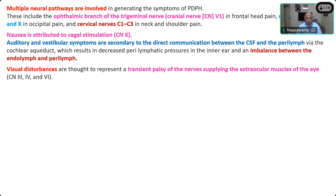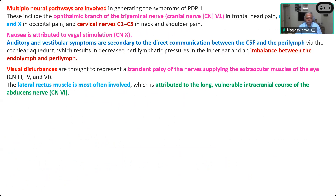Visual disturbances are caused by transient palsy of the nerves supplying the extraocular muscles — cranial nerves 3, 4, and especially cranial nerve 6, which supplies the lateral rectus. In some patients with very severe PDPH, a medial squint may also be seen. All this involvement of nerve structures must be included when writing the pathophysiology in your answer.